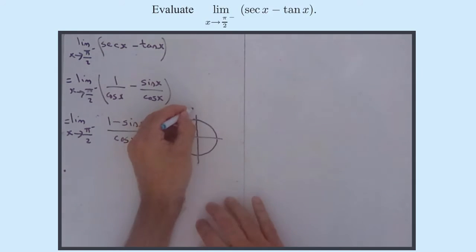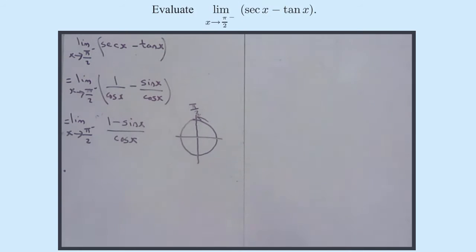As you can see, pi by 2 is over here, so if we're approaching pi by 2 from something less, we're kind of approaching it from this way, and you can see as we approach pi by 2, sine x, remember, is the height, that's approaching 1.